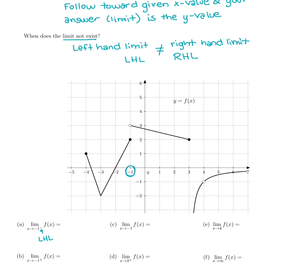The X value is negative 1, and we want to approach from the left-hand side. Starting at negative 2, which is to the left of negative 1, I follow wherever the graph is. As I go toward X = negative 1, tracing the graph over, the Y value that we get close to from the left is 2. That's my left-hand limit.